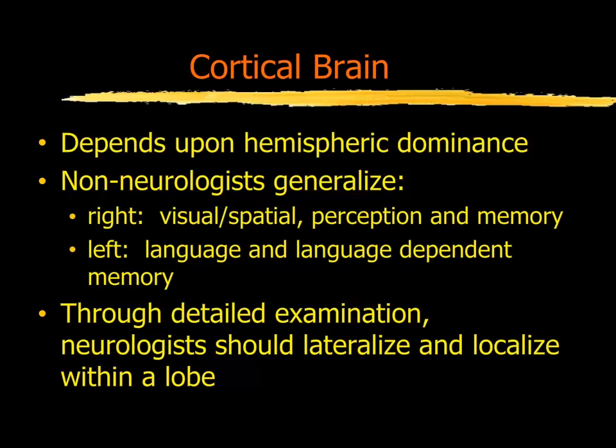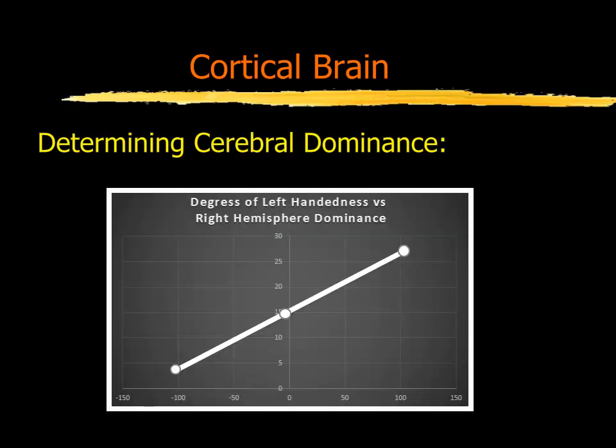Non-neurologists tend to think in terms of the left hemisphere controlling language and the right hemisphere controlling memory or visual spatial elements. In general, that's true, but as neurologists, we should be able to further localize both which side, which lobe, and which area within each lobe the actual pathology may lay in order to explain all of the findings. The first thing that needs to get established is which hemisphere is, in fact, the dominant hemisphere.